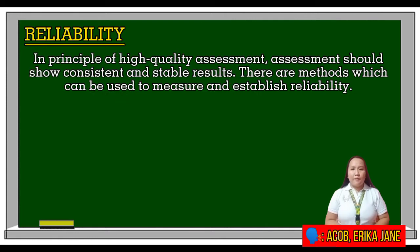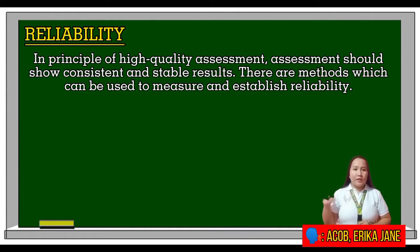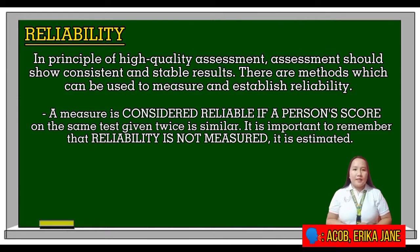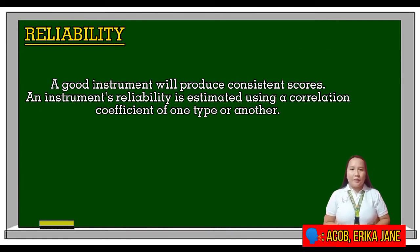Next, after validity is reliability. Under the principle of high quality assessment, assessment should show consistent and stable results. There are methods that can be used to measure and establish reliability. A measure is considered reliable if a person's scores on the same test given twice are similar. It is important to remember that reliability is not measured — it is estimated using correlation coefficients of one type or another.